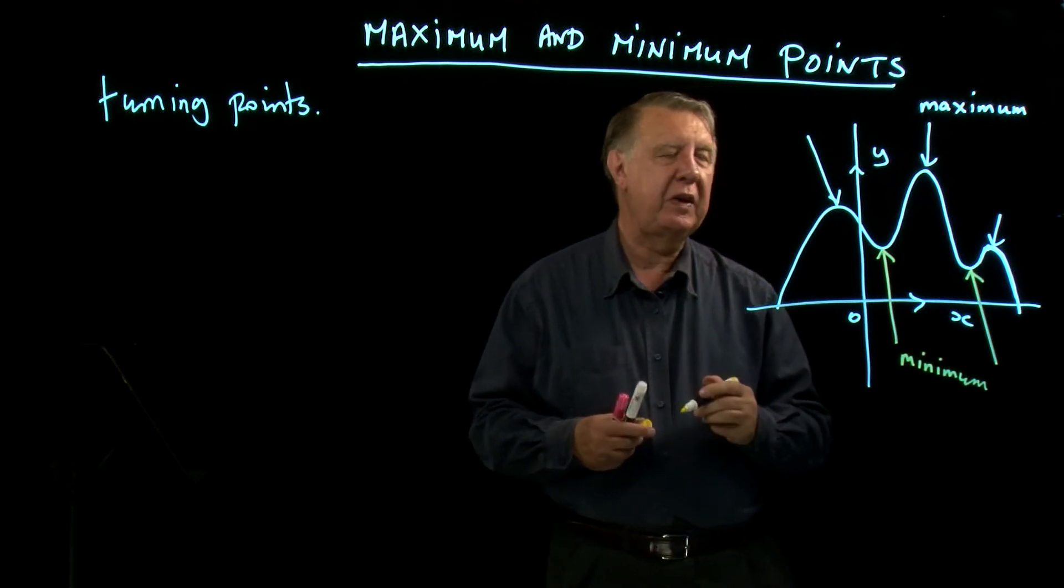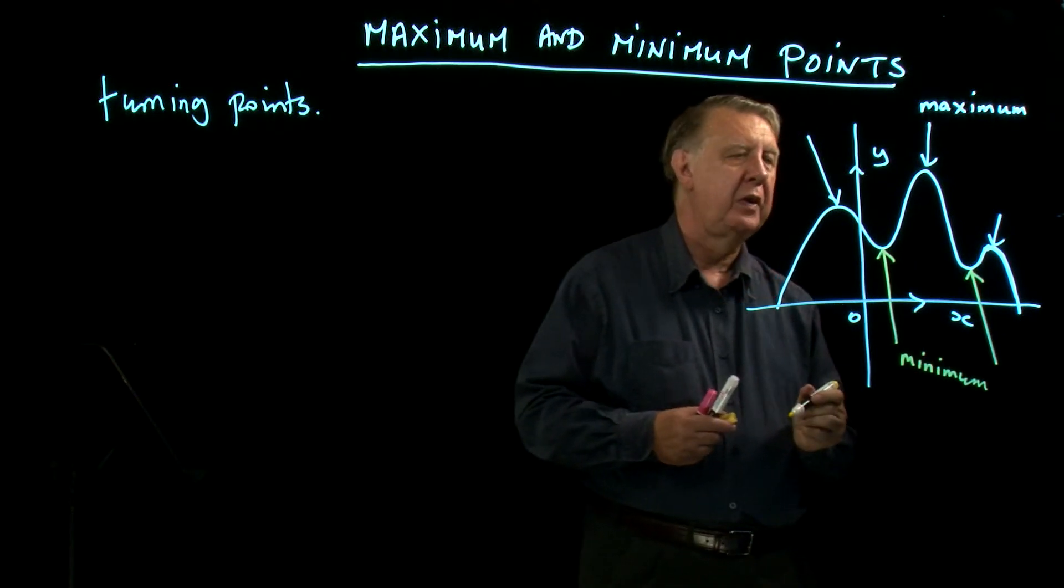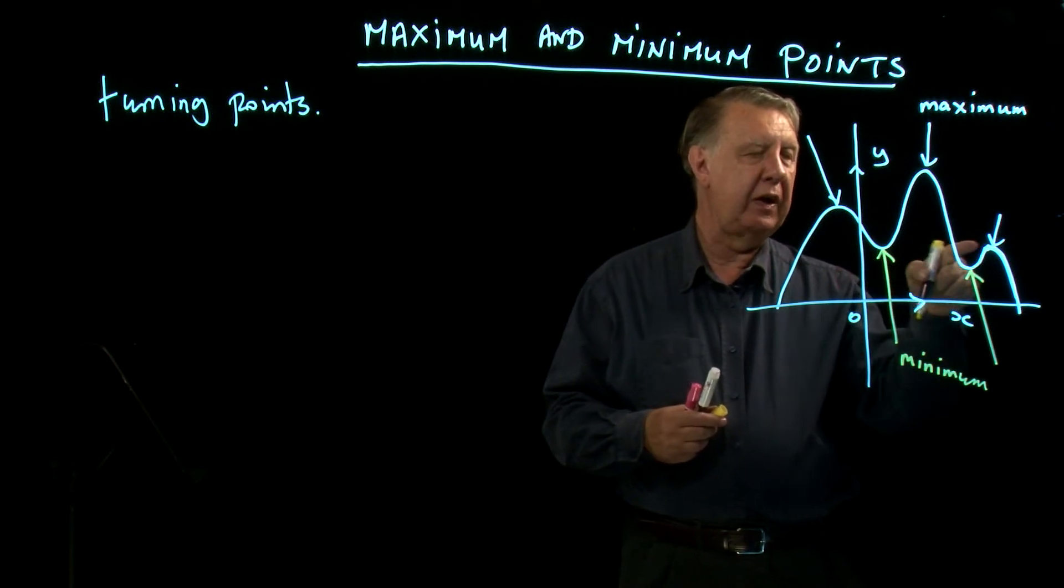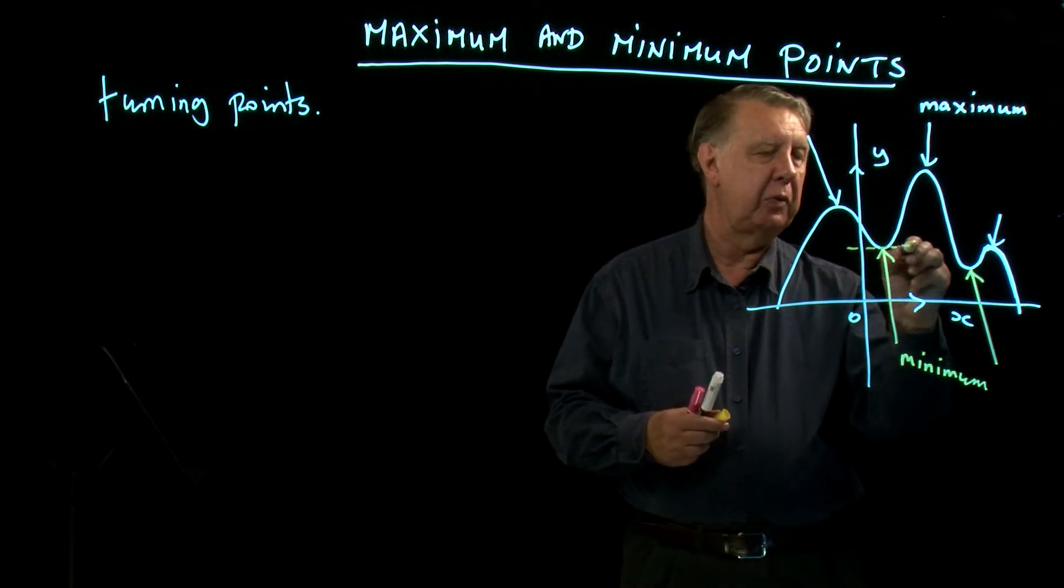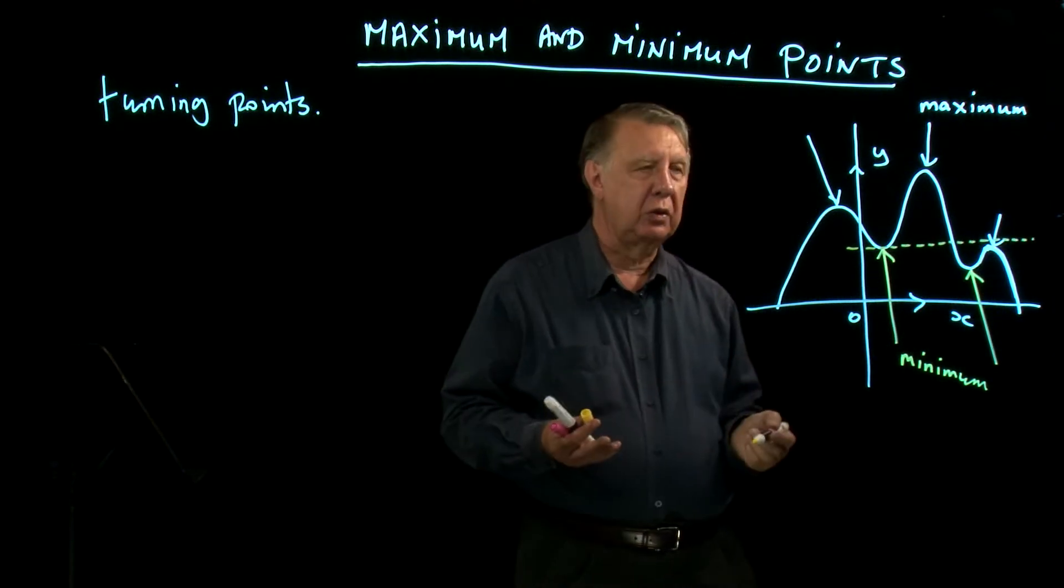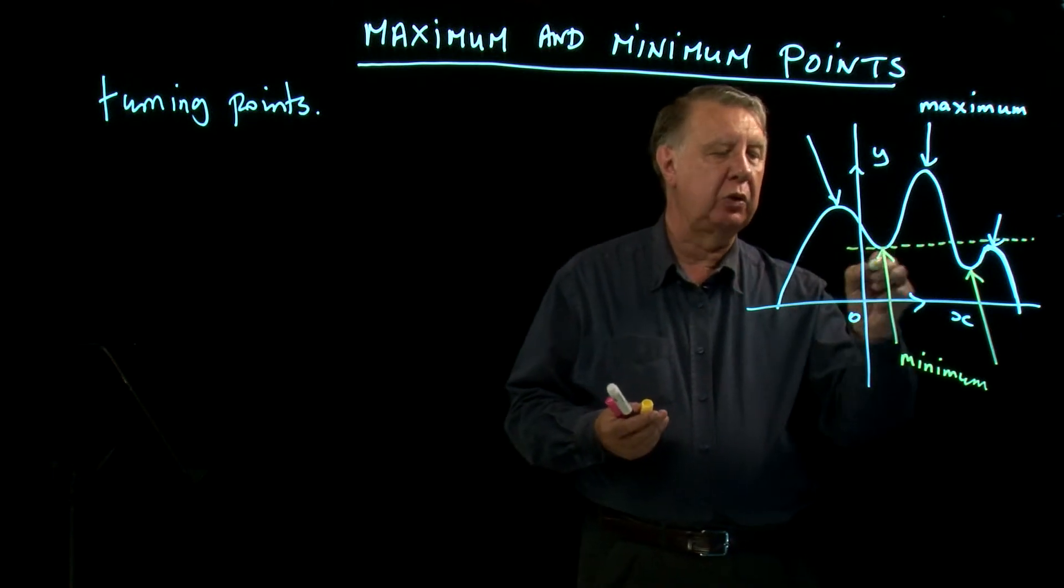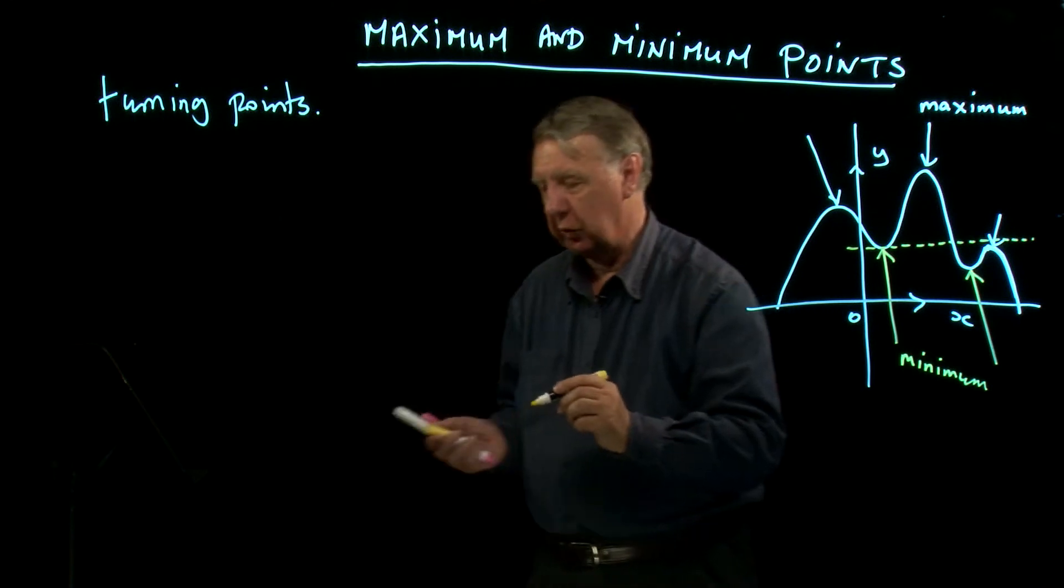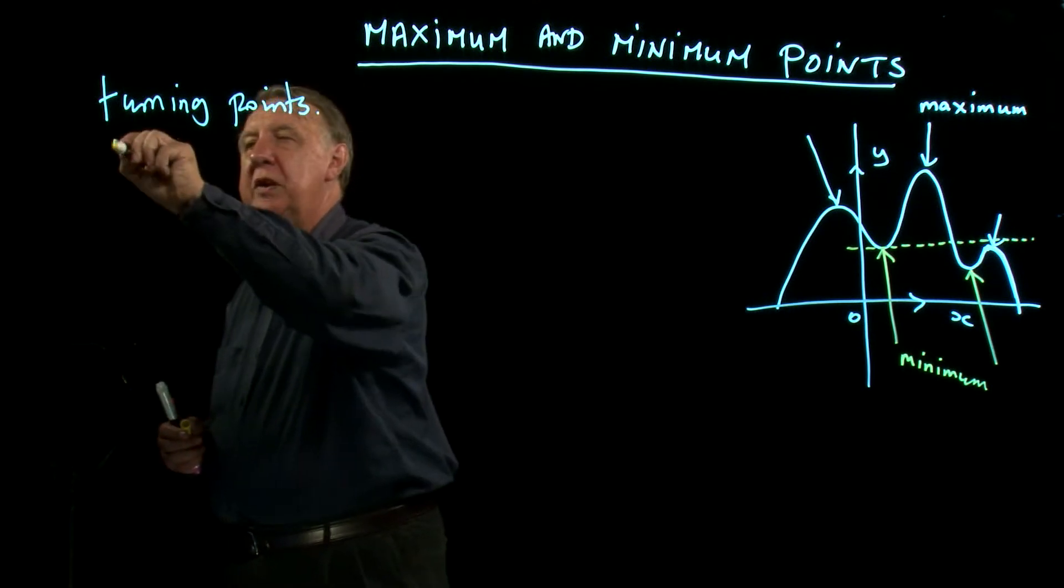Now be careful with these words maximum and minimum, because it is possible for a minimum point to be higher than a maximum point. So these are local descriptions—this is a local minimum and that's a local maximum—so we talk about local turning points.